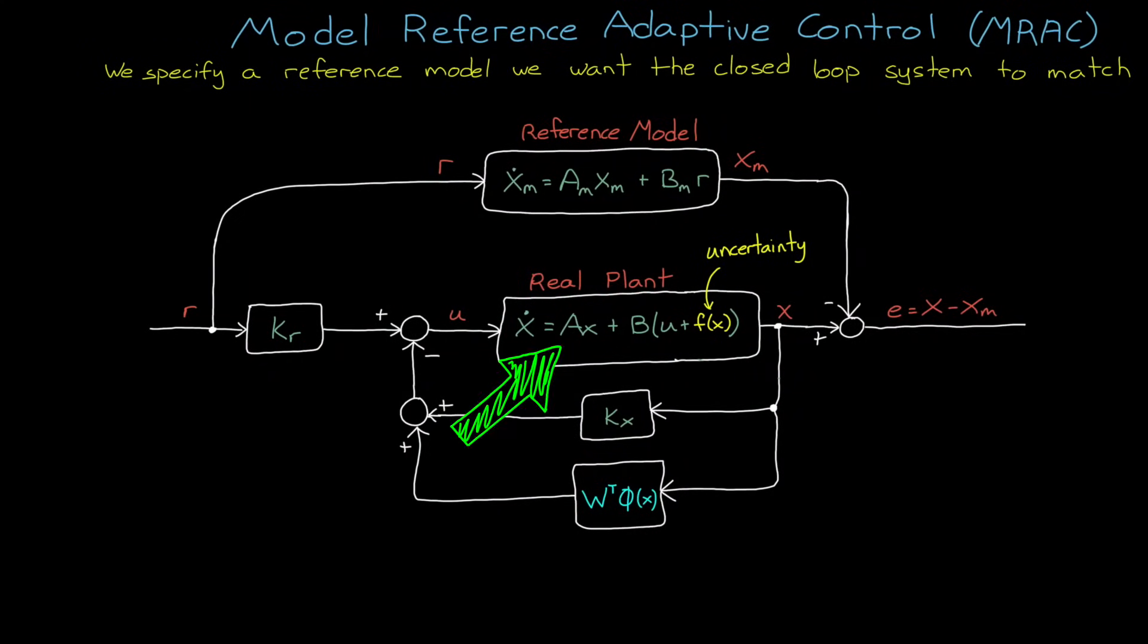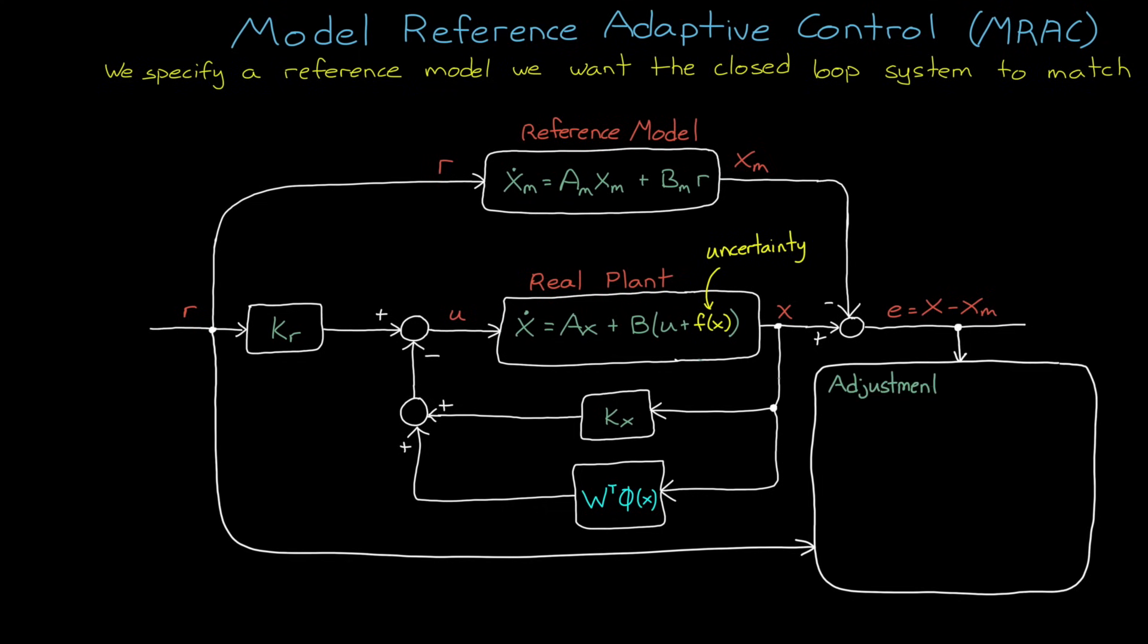If you have a nominal model and a reference model and a set of basis functions defined, then you can use them along with the error term and the reference signal to learn W over time. In this way, we're converging on the unknown dynamics so that we can cancel them out. But we can actually do more than just learn the unmodeled dynamics. Because if you don't have a nominal model at all, we can also set up the adjustment mechanism to learn KR and KX. So at the exact same time, we can learn the unmodeled dynamics, we can cancel them out, and learn the control parameters to reach that model matching condition.